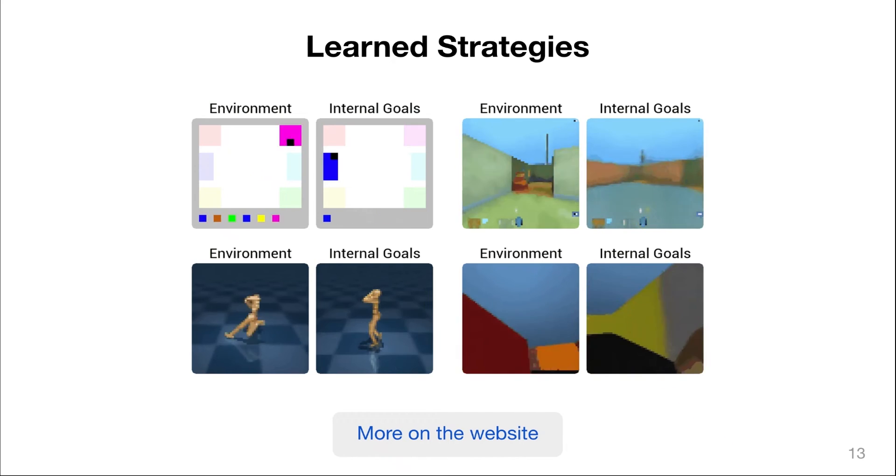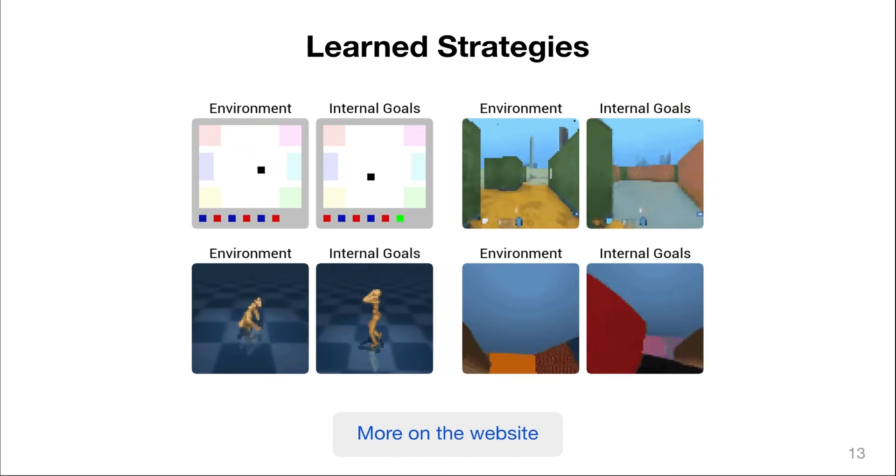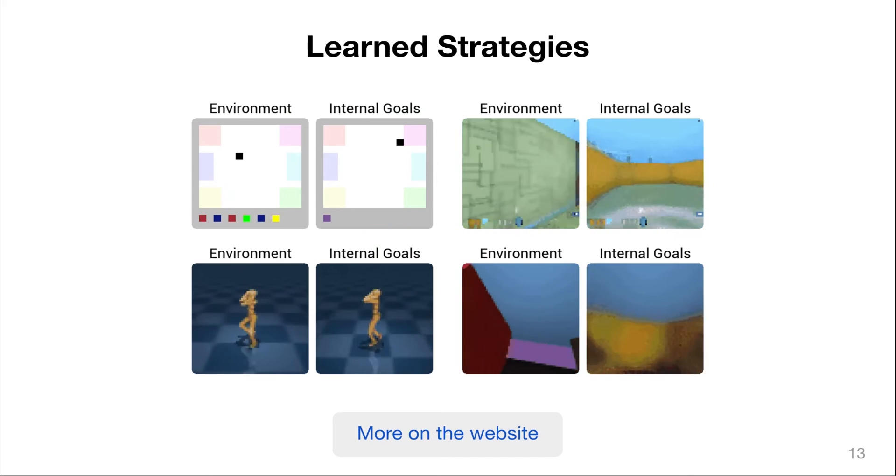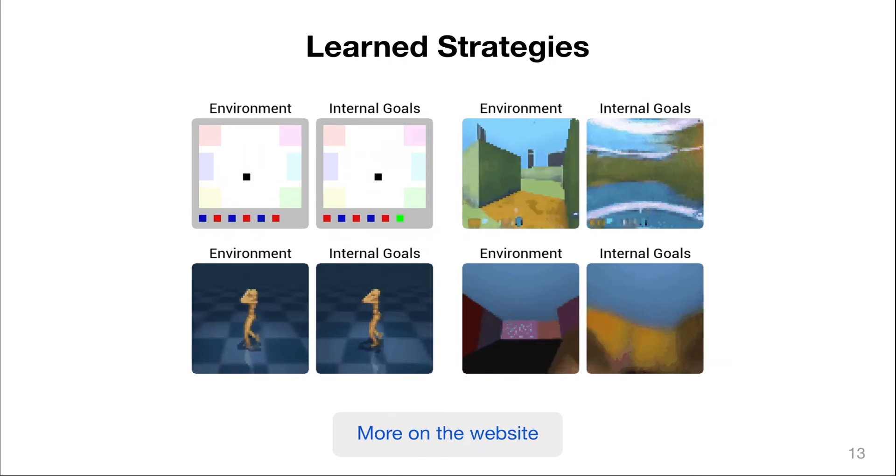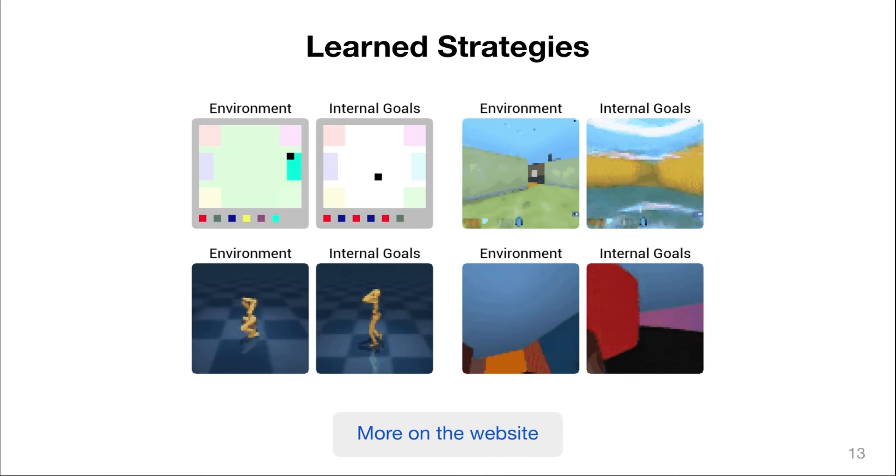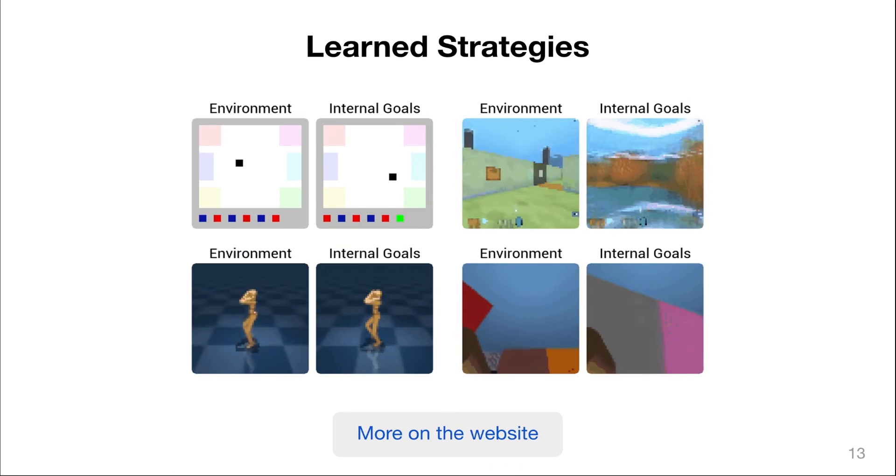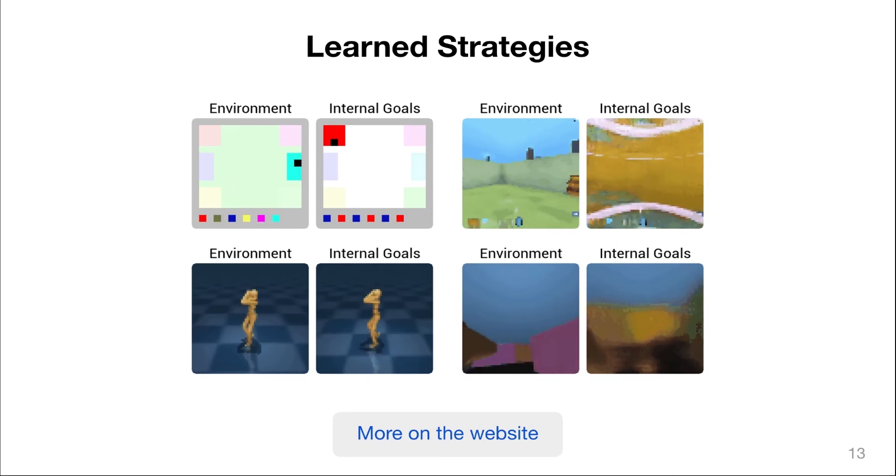Director learns intuitive strategies for breaking down complex long-horizon tasks into manageable sub-goals. For each environment, the left image shows what the agent does in the real environment, and the right image shows the imagined goal by the high-level policy. Now these goals are abstract feature vectors, but using the world model, we can actually decode them back into images for human inspection and interpretability.